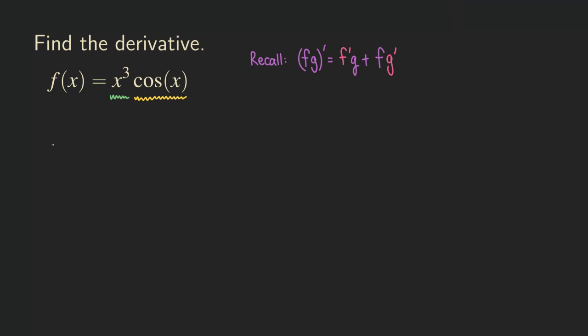So when we take the derivative, we know that the first function is x cubed. We need to take the derivative of the first function, but we do not do anything to the second function, so just copy. The derivative of the first function is 3x squared.